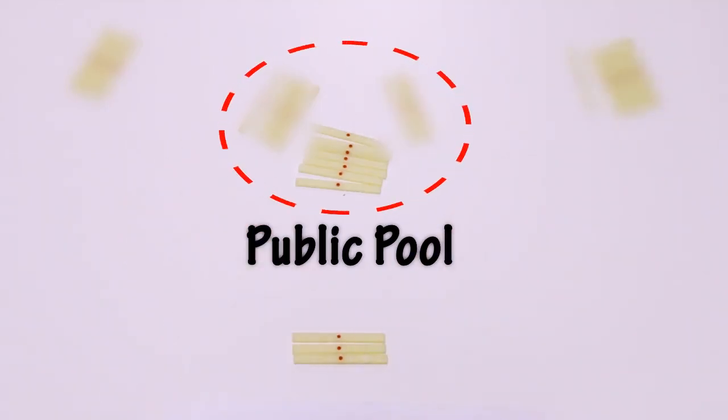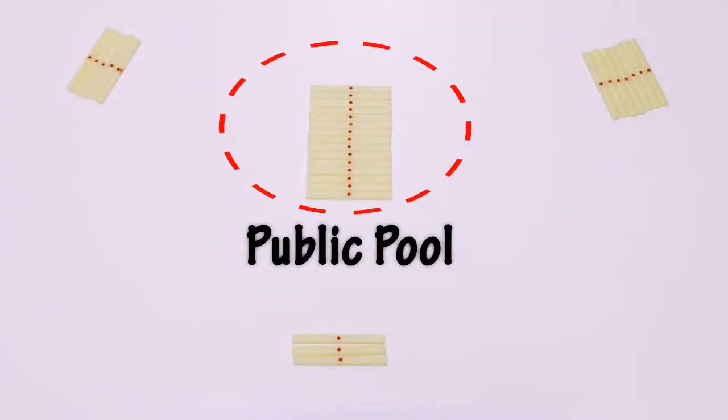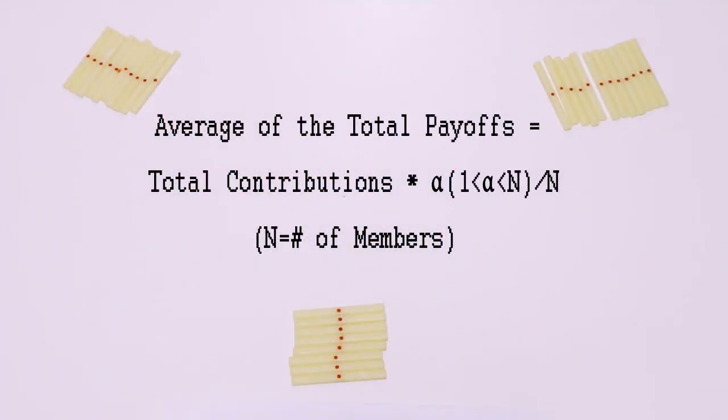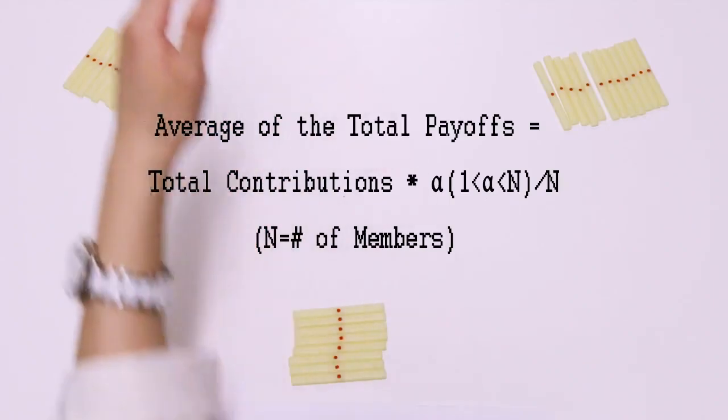All team members get the same score, which is the average of the total payoffs calculated by multiplying the total contributions with a factor greater than 1 but less than the number of the group members.